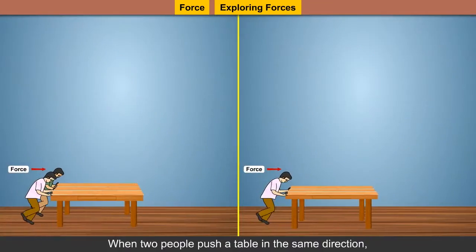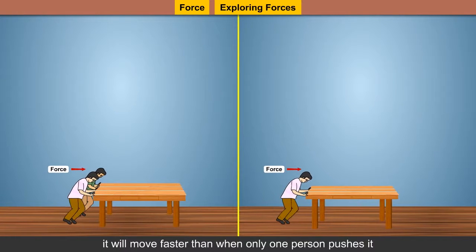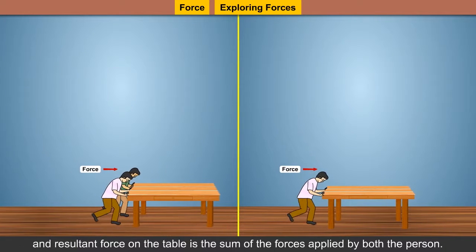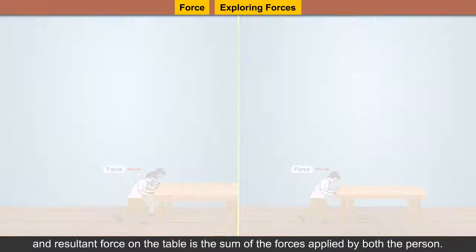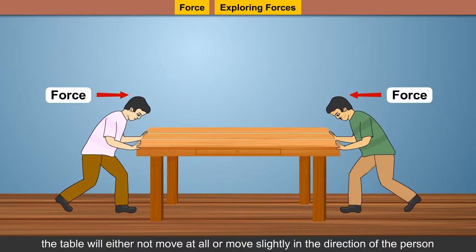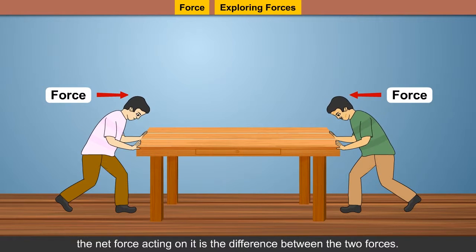For example, when two people push a table in the same direction, it will move faster than when only one person pushes it, and the resultant force is the sum of the forces applied by both people. When two people push the table in opposite directions, the table will either not move at all or move slightly in the direction of the person who applies more force. This proves that if two forces act in opposite directions on an object, the net force is the difference between the two forces.